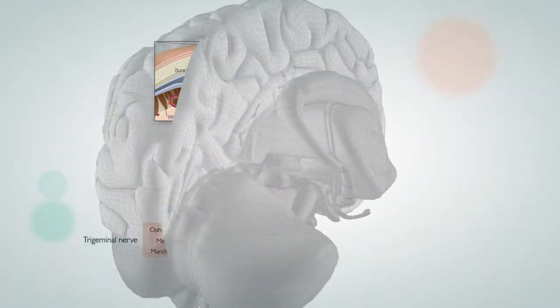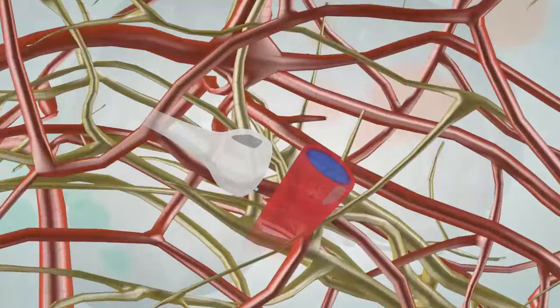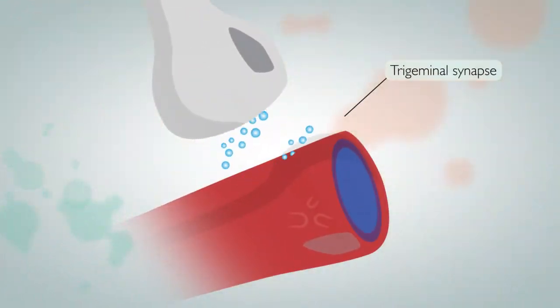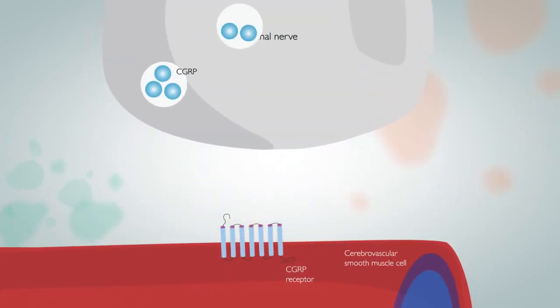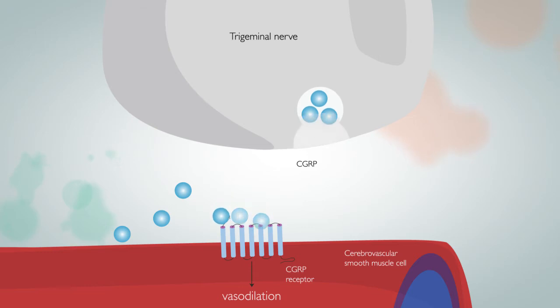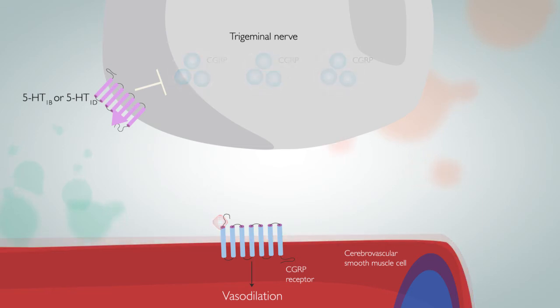Increased understanding of migraine pathophysiology has led to the identification of novel treatment targets, particularly the trigeminal synapse. New acute therapies largely target CGRP signaling through two distinct mechanisms: the blockade of CGRP to its receptor and the stimulation of serotonin receptors on trigeminal vascular nerves, preventing CGRP release.